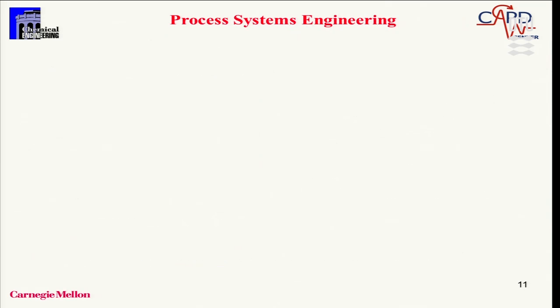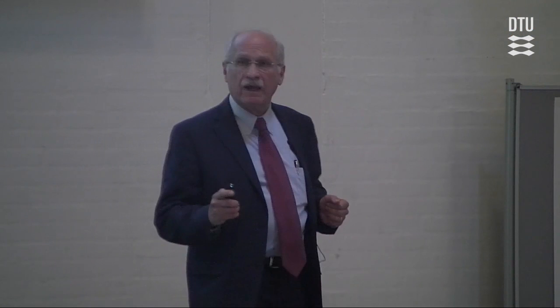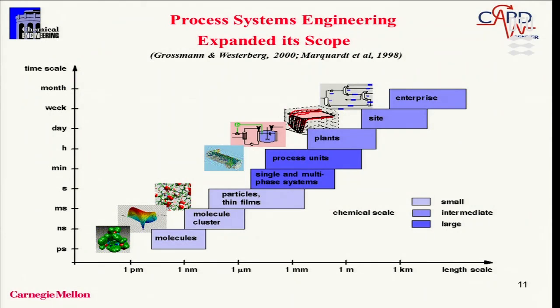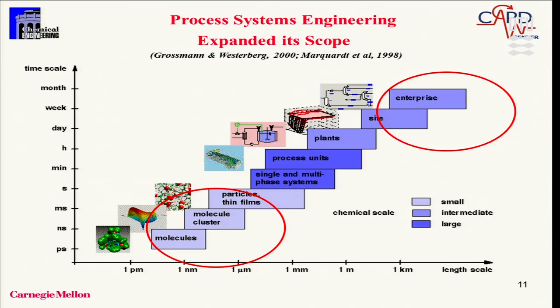What about process systems engineering? Over the last 10 years, it has greatly expanded its scope. Looking at a diagram with length scales from picometers to kilometers and time scales from picoseconds to months, traditional PSE concentrated in the middle — from molecular to particles to process units and plants. But over the last decade, there's been increasing emphasis on the molecular level on one dimension, and toward the enterprise level on the other — looking not just at a single plant but collections of plants and networks. There's even work addressing global-level problems like climate change within PSE.